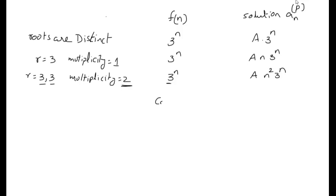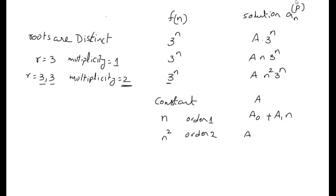If F(n) is a constant, then the particular solution is just A. If F(n) = n, a polynomial of order 1, the particular solution is a₀ + a₁·n. If F(n) = n², a polynomial of order 2, the particular solution is a₀ + a₁·n + a₂·n².